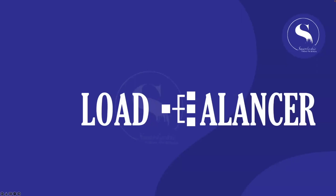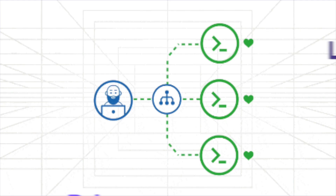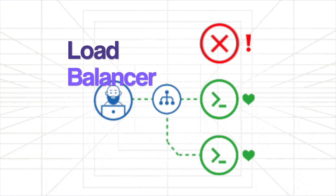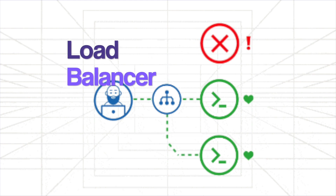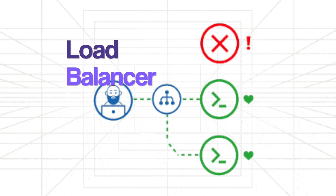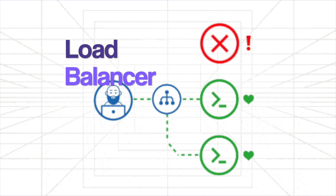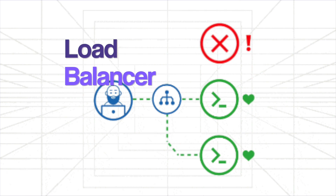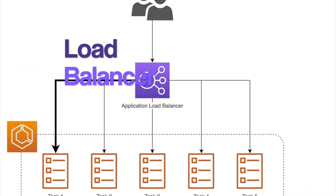Let's take a deeper look into the load balancer. A load balancer is a piece of hardware or virtual hardware that acts like a reverse proxy to distribute network or application traffic across different servers. In other words, a load balancer efficiently distributes network traffic across multiple machines to balance out the load and prevent any hotspots.